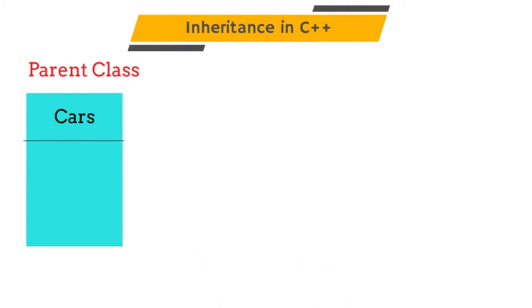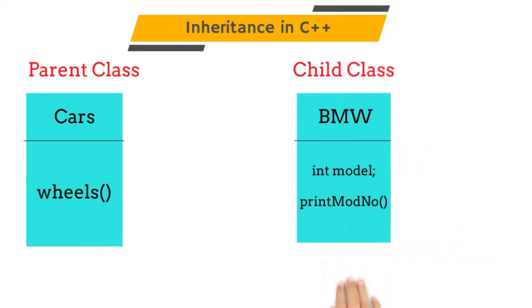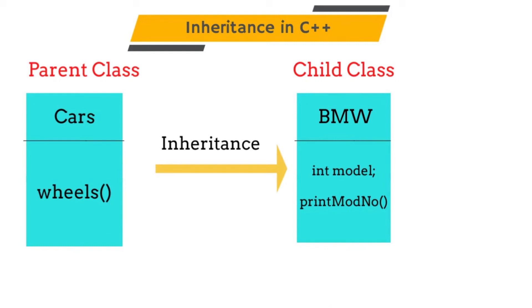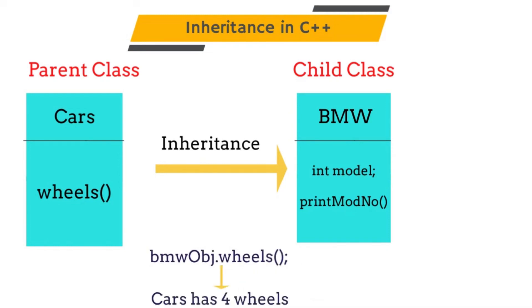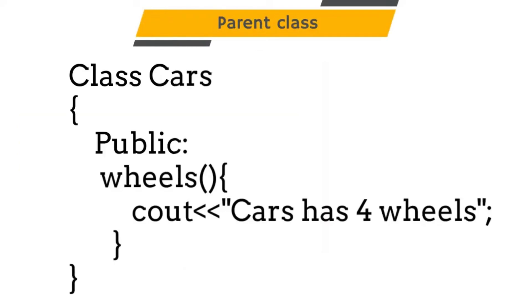The same concept is used in C++ and other object oriented programming languages. Consider a class Cars that has a wheels method which prints 'car has four wheels.' If we create a child class called BMW that inherits the Cars class, then we don't need to rewrite the wheels method — we can directly reuse it. If we call the wheels method using a BMW object, it will print 'car has four wheels.' Inheritance allows us to reuse our code.